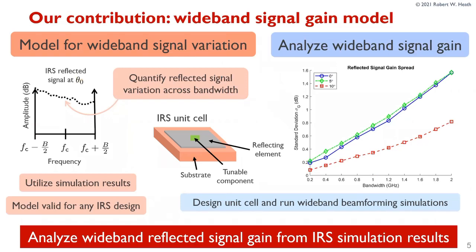We plan to contribute to this field by developing a model for wideband signal variation. This involves quantifying the reflected signal gain variation across the bandwidth. We do this by utilizing simulation results so that the model can be valid for any IRS unit cell design. For a specific IRS design built around a certain frequency, you can perform simulations and then use this model to analyze how a large bandwidth may affect its signal gain. Since this model is valid for any IRS design, we also design an IRS unit cell consistent with many designs seen in current literature, in terms of its amplitude and phase response, and then use the model to analyze the reflected signal gain spread across a large bandwidth.